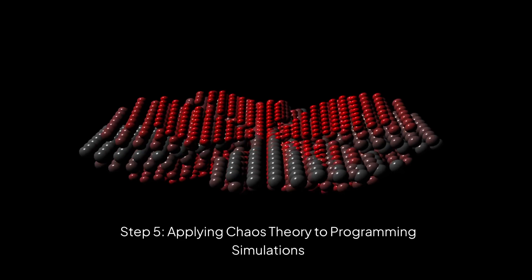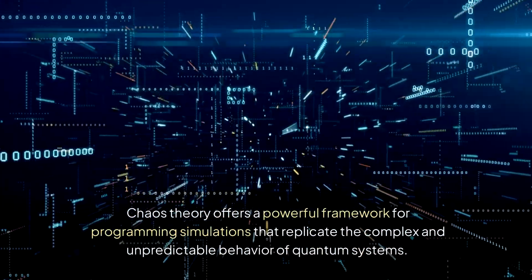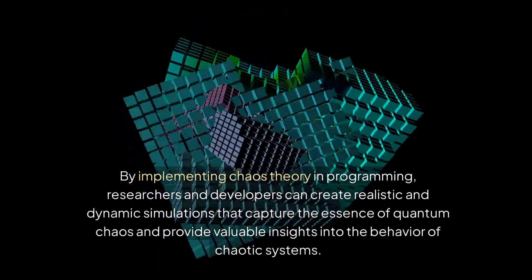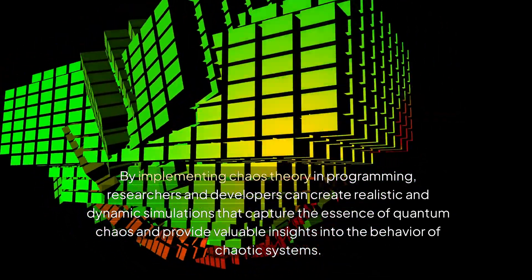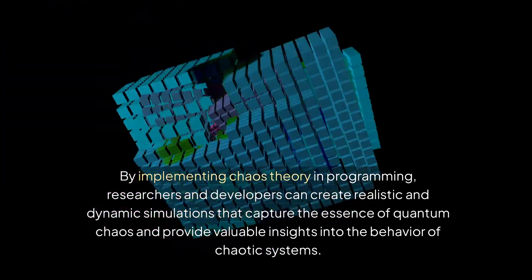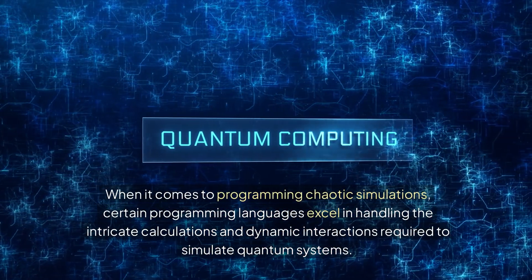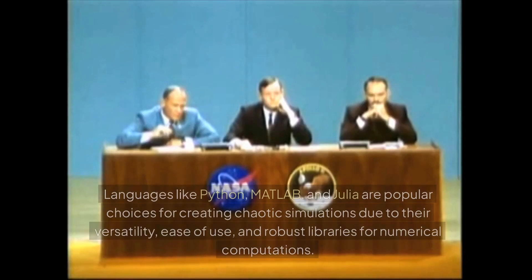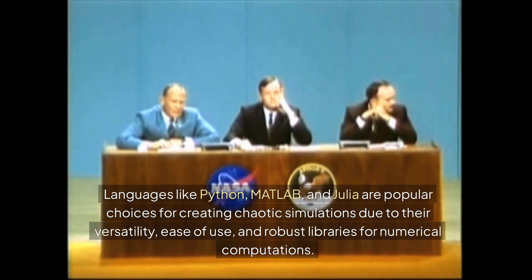Step 5: Applying Chaos Theory to Programming Simulations. Chaos theory offers a powerful framework for programming simulations that replicate the complex and unpredictable behavior of quantum systems. By implementing chaos theory in programming, researchers and developers can create realistic and dynamic simulations that capture the essence of quantum chaos. Languages like Python, MATLAB, and Julia are popular choices for creating chaotic simulations due to their versatility, ease of use, and robust libraries for numerical computations.